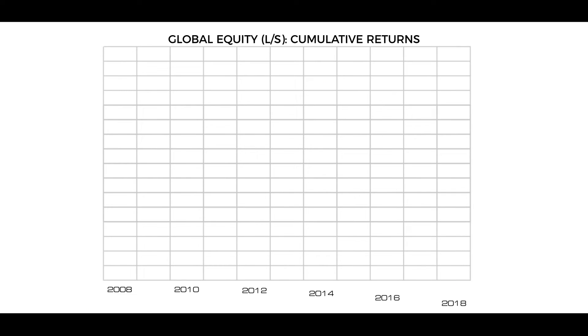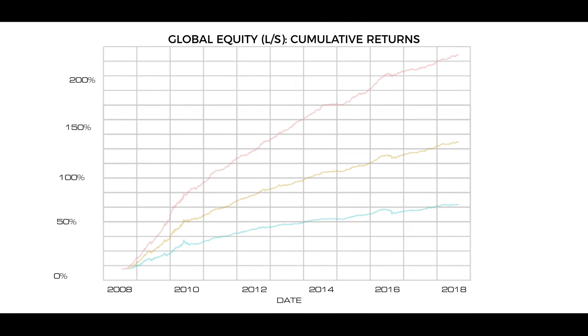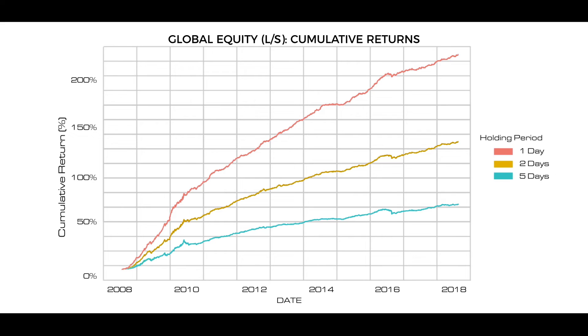Finally, by combining our country strategies into a global portfolio, we ensure maximum diversification, with information ratios as high as 4.8 for a one-day holding period and 2.6 for a one-week holding period.